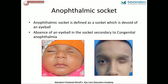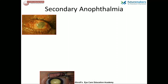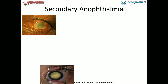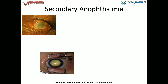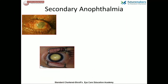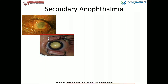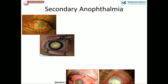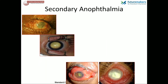An ophthalmic socket is described as an orbit which is devoid of an eyeball, which may be due to the absence of eyeball at birth — also described as congenital anophthalmia, which may be unilateral or bilateral — and acquired anophthalmia, which is usually secondary to surgical removal of the eyeball as indicated in intraocular tumors or severe infections like endophthalmitis or panophthalmitis.